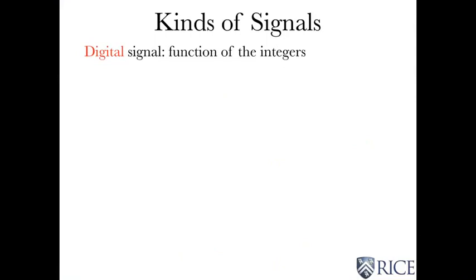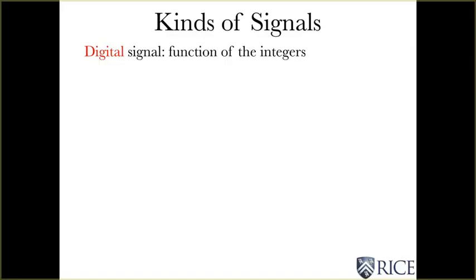So the next kind of signal is a digital signal. And a digital signal is a function of the integers. It's a function of a discrete valued independent variable, which we are just going to take to be the integers.